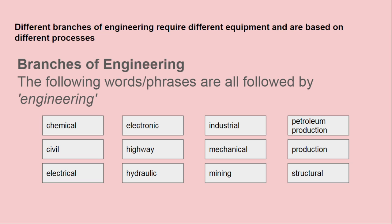Branches of engineering: the following words and phrases are all followed by 'engineering' — chemical engineering, electronic engineering, industrial engineering, petroleum production engineering, civil engineering, highway engineering, mechanical engineering, electrical engineering, hydraulic engineering, mining engineering, and structural engineering.